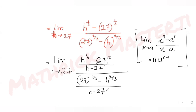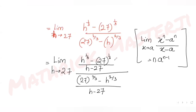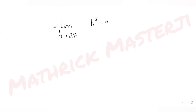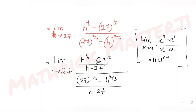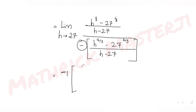So limit h tends to 27: numerator is [h^(1/3) − 27^(1/3)] / (h − 27). For the denominator, taking out a minus sign gives [h^(2/3) − 27^(2/3)] / (h − 27), with a factor of −1 out front. I keep that minus sign out and apply the limits to numerator and denominator separately.